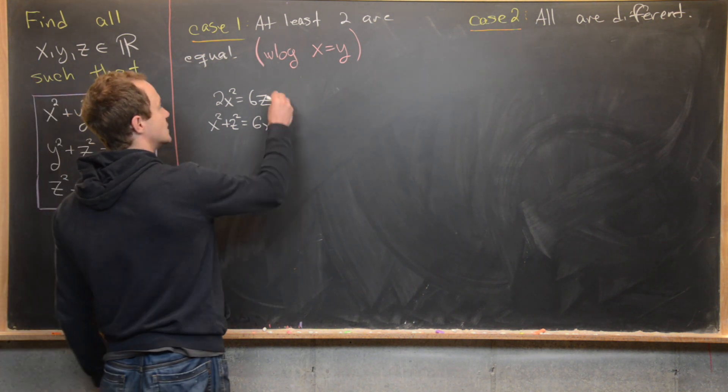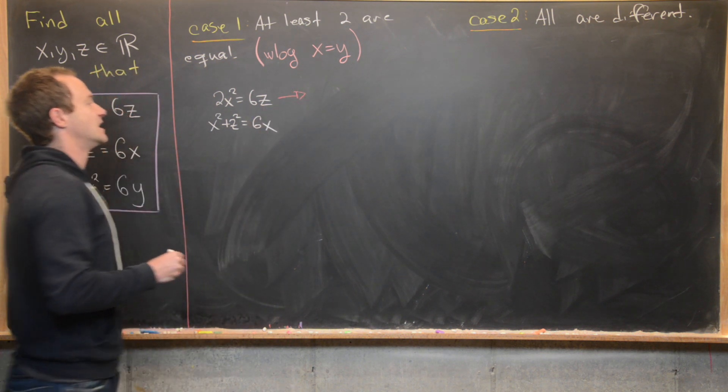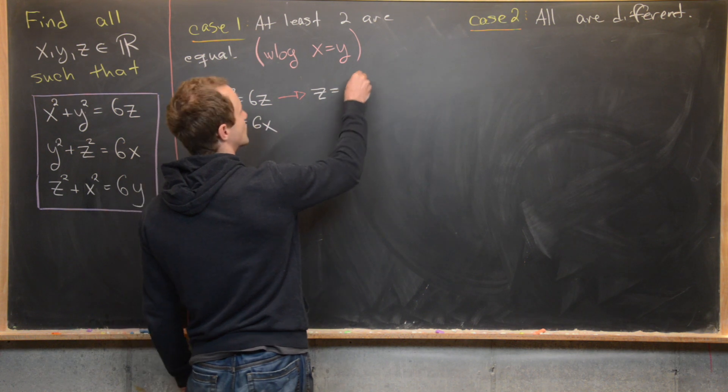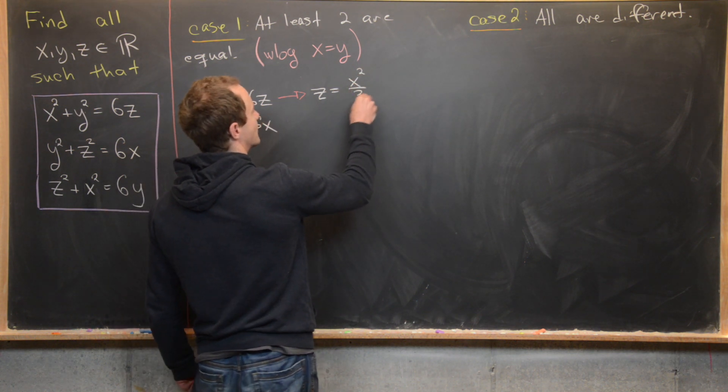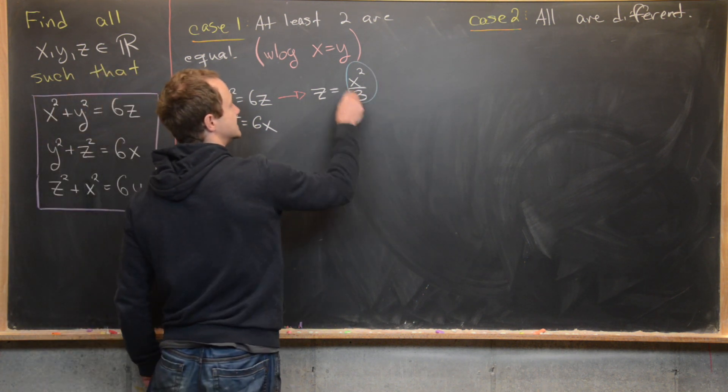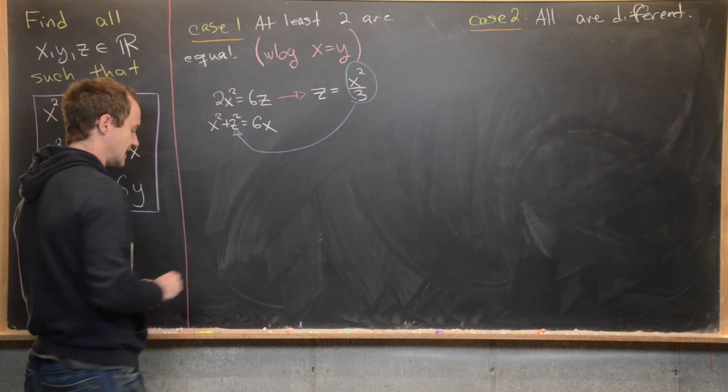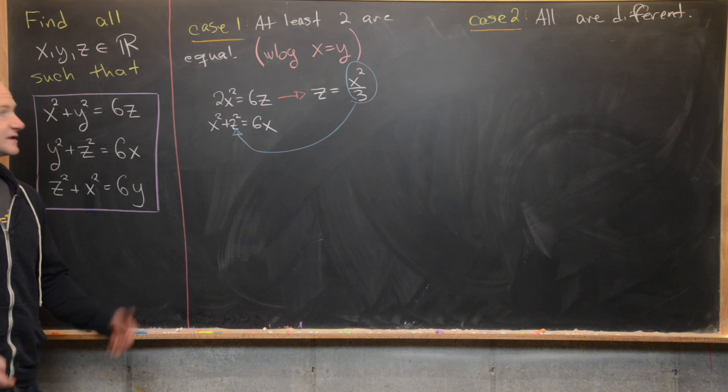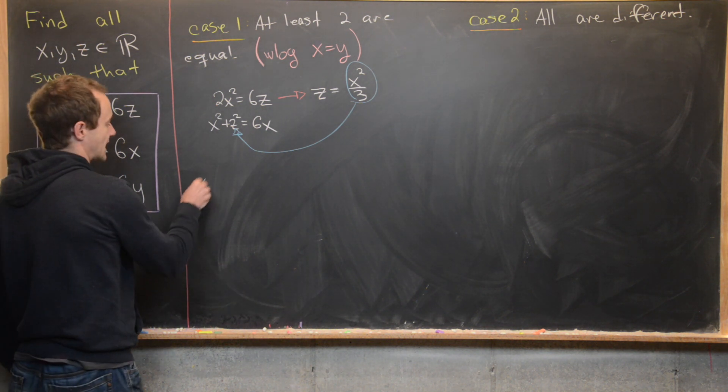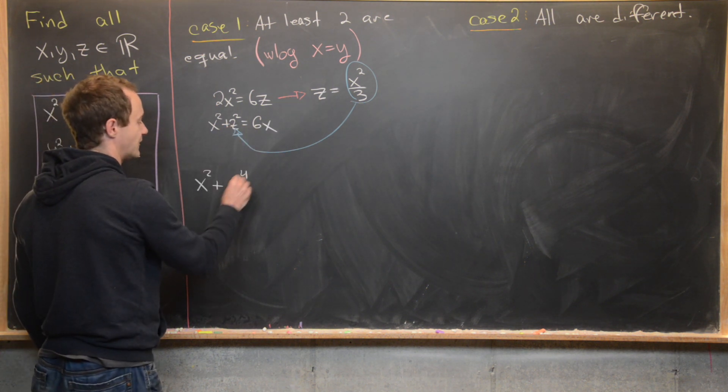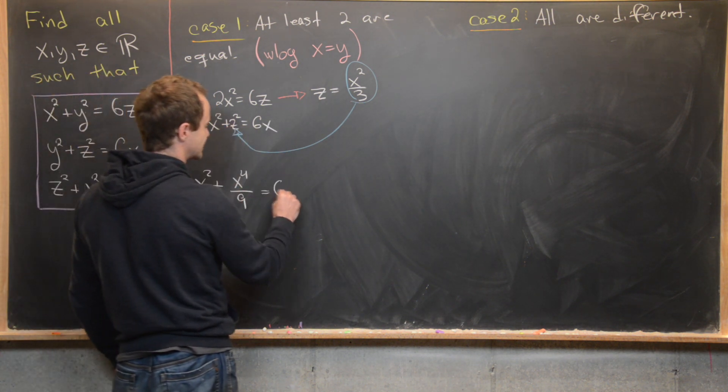First, I want to notice that we can use this first equation to solve for z pretty handily. So we have z = x²/3. Now we can plug this value of z into our second equation and we have a quartic polynomial in terms of x. So let's see what we get. We're going to have x² + z², which is x⁴/9, equals 6x.